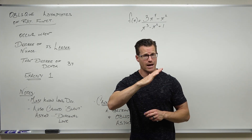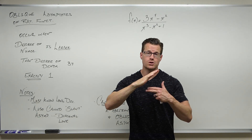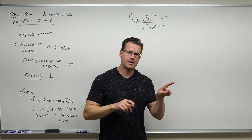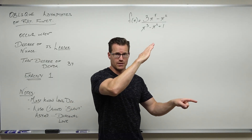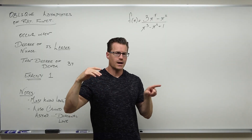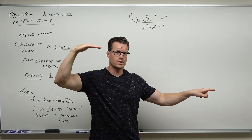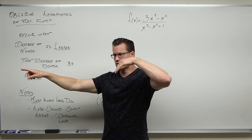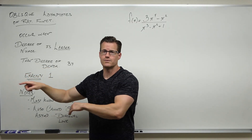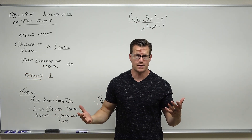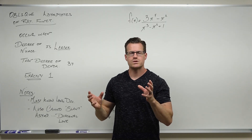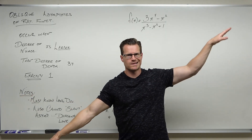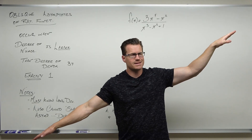An oblique asymptote is a diagonal line that your function is going to approach. As x gets to positive infinity, your function is going to get closer to that diagonal line, and as x approaches negative infinity, it's going to get closer to that diagonal line too — it's going to follow it for infinity and beyond. It's very much like a horizontal asymptote; it's just a diagonal line.